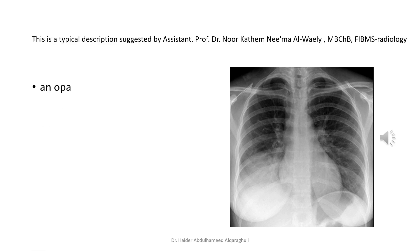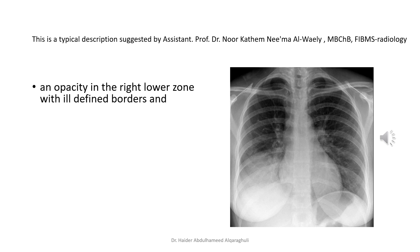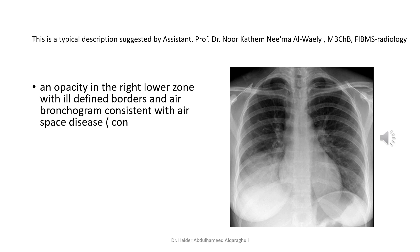An opacity in the right lower zone with ill-defined borders and air bronchogram, consistent with air-space disease — i.e., consolidation — obscuring the right hemidiaphragm but not the right heart border, localizing the abnormality to the right lower lobe.